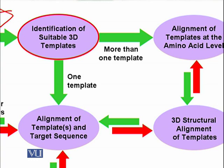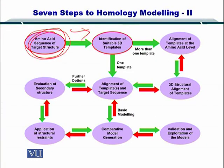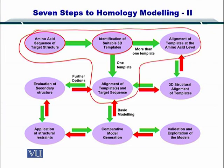Now, if you had more than one template that you found, then of course you have to perform alignments multiple times, that is the multiple sequence alignment. While if you found one template, all you have to do is align the template and the target sequence. So essentially the first step of homology modeling encompasses these four steps. Let's start.